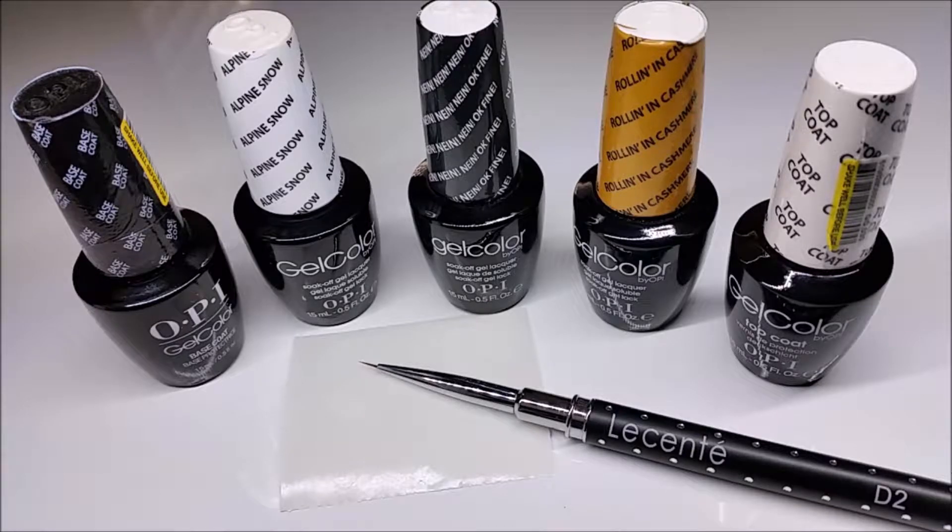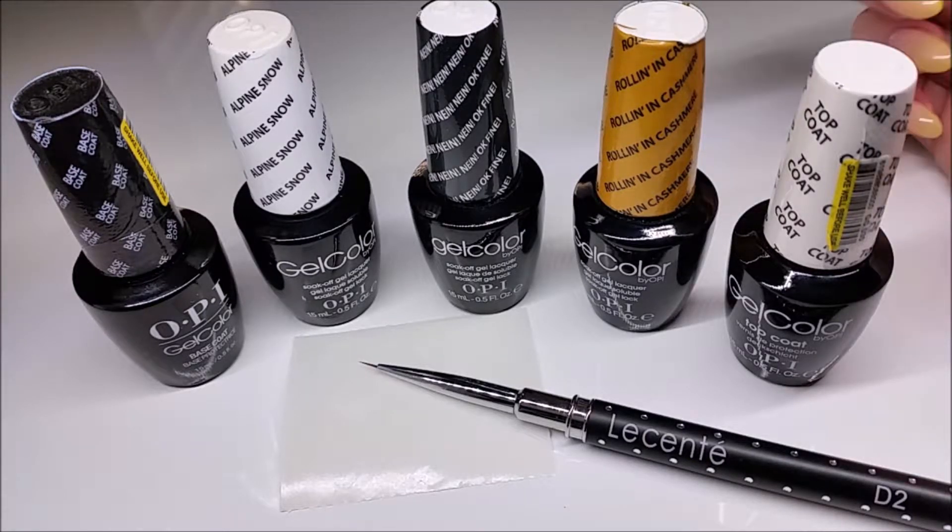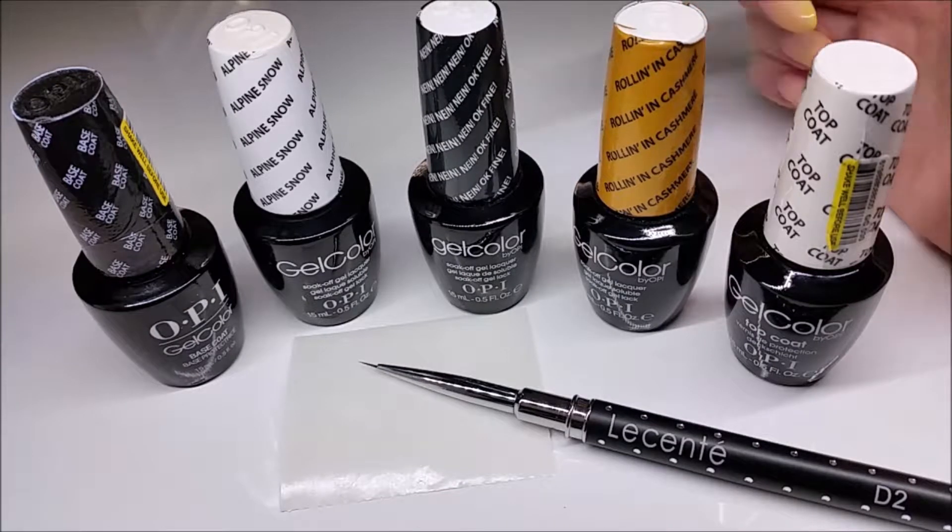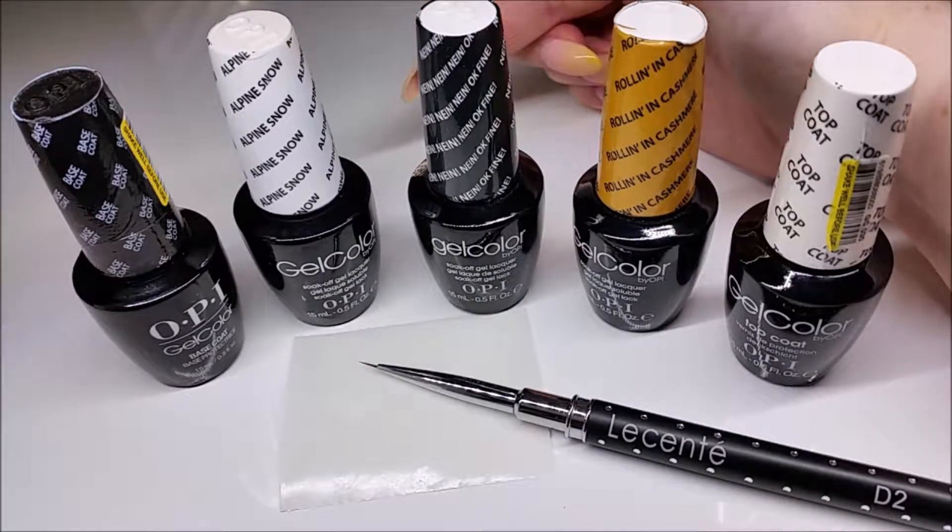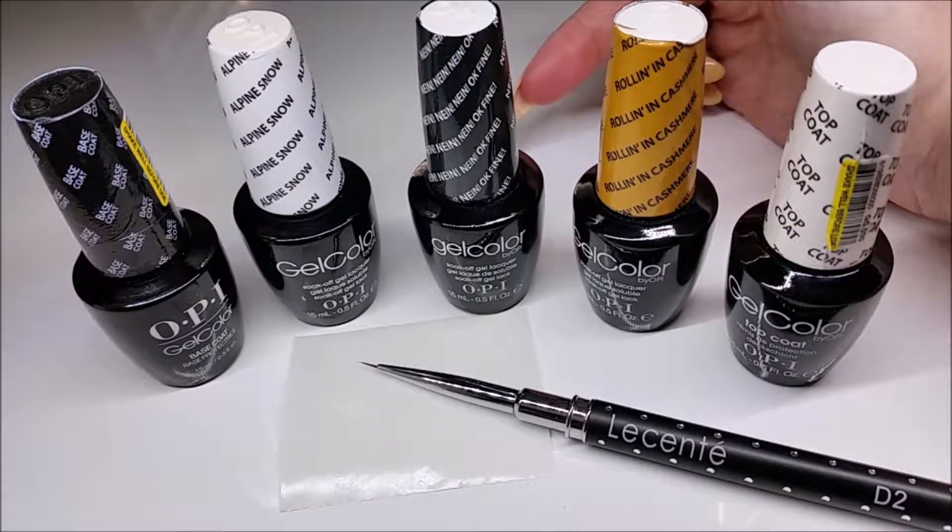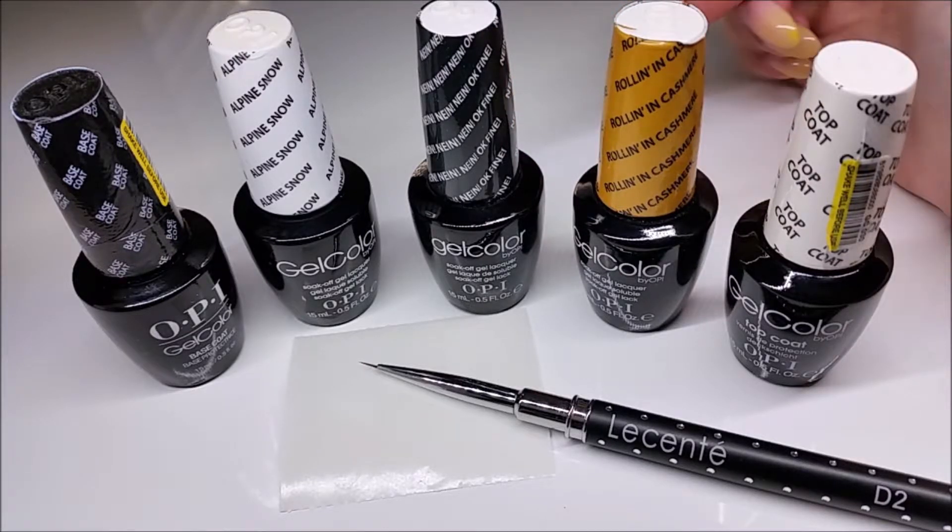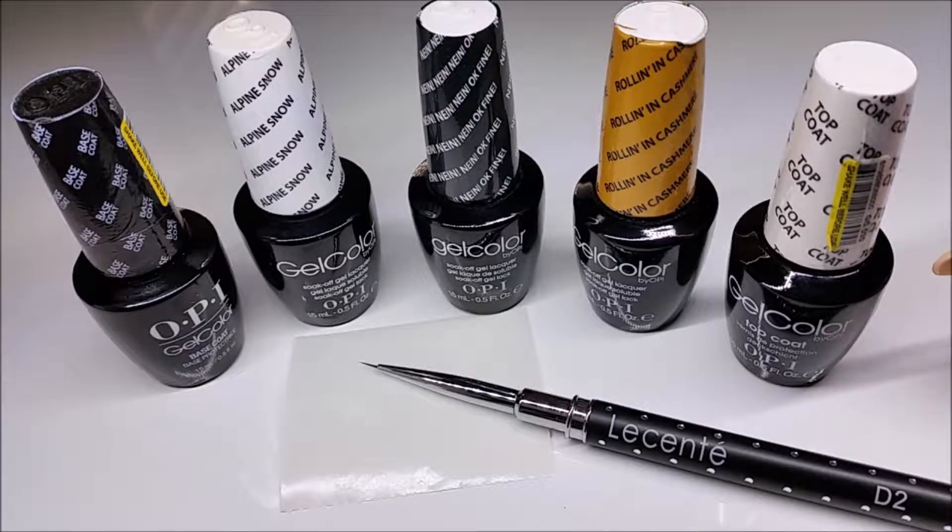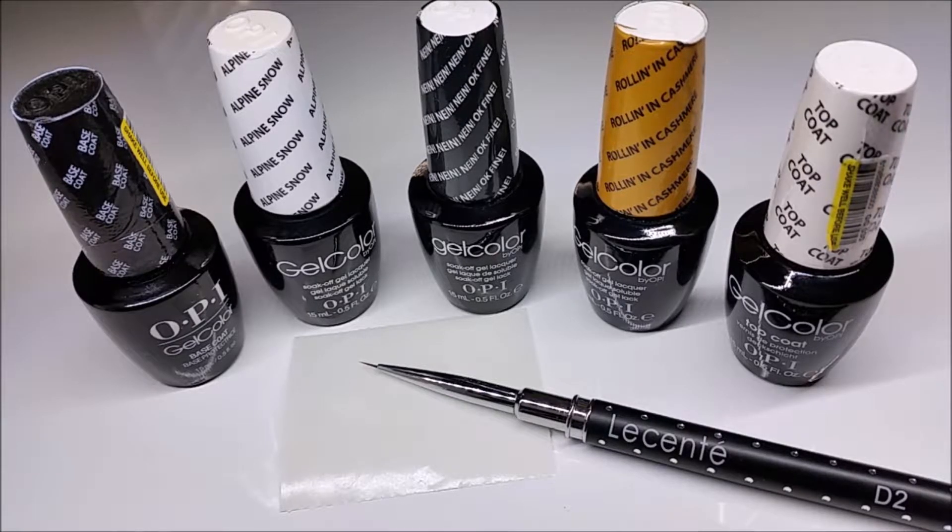Okay, so the things that you'll need for marbling are your base coat, you'll need your base color for your design. You'll need your colors that you're going to be marbling with. So today I'm doing a white base color with a dark grey and gold marbling. And then you'll need your top coat. That's a really important part of the design which you'll see in a minute.